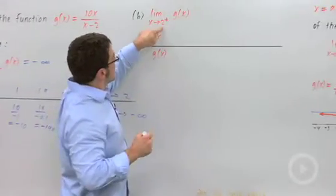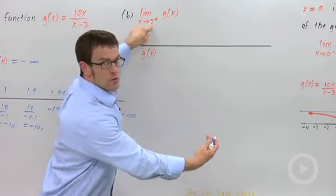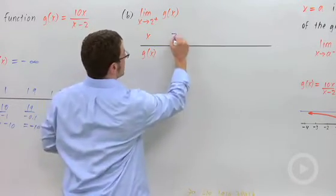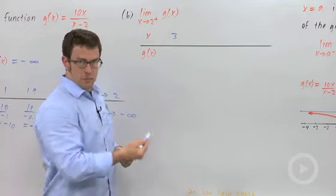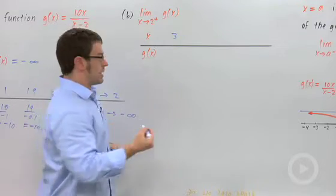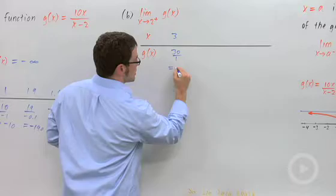Now let's see what happens when x approaches 2 from the right. So pick a number to the right of 2, like 3. 10 times 3 is 30 over 3 minus 2, 1, is 30.